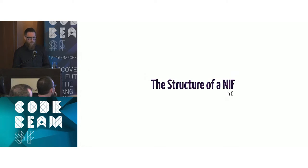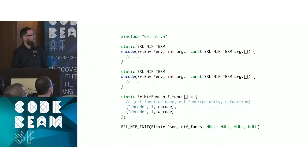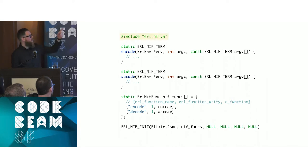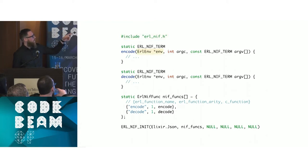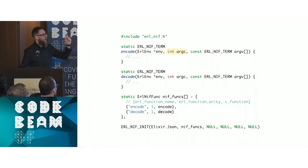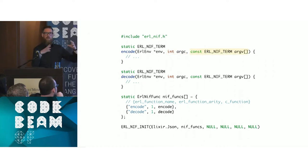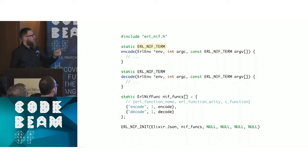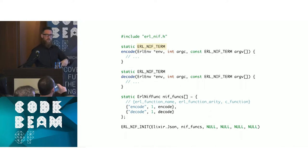Here's the structure of a NIF in C using the Erlang NIF API. We include erl_nif.h, define encode and decode functions. Each NIF function takes the Erl_NIF_Env as the first argument, an integer count of arguments, and a vector of the actual Erlang terms provided. Each NIF just returns an Erlang term.